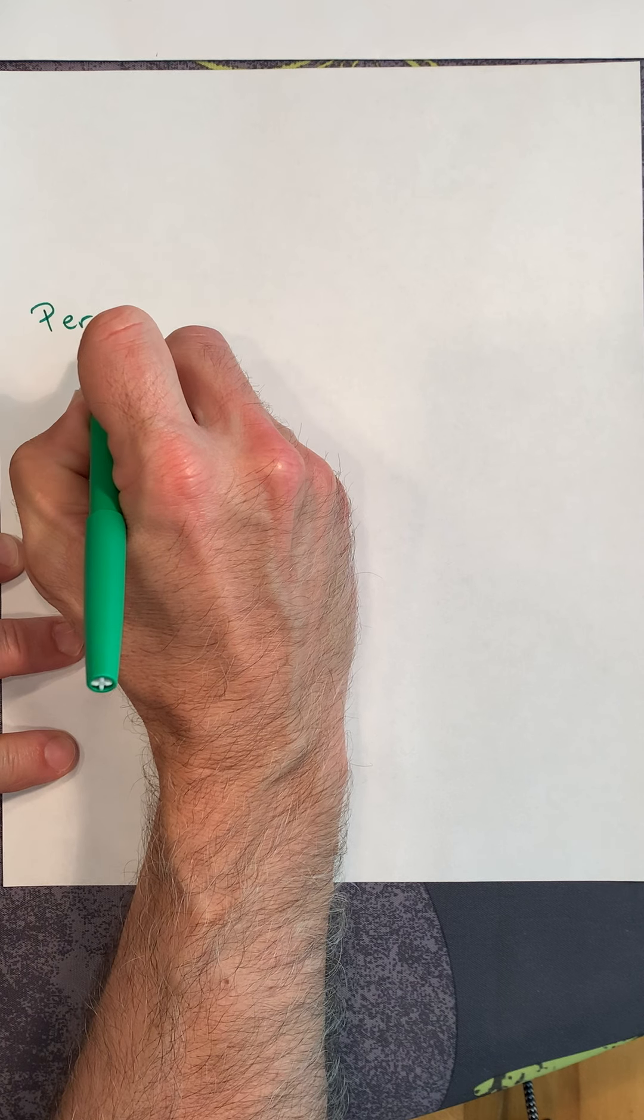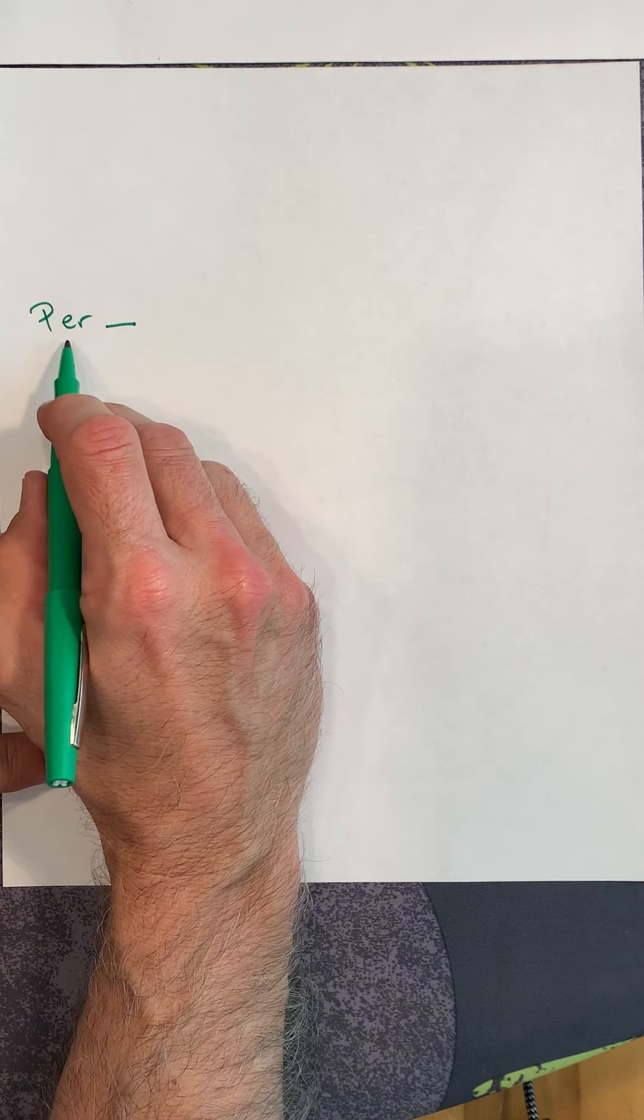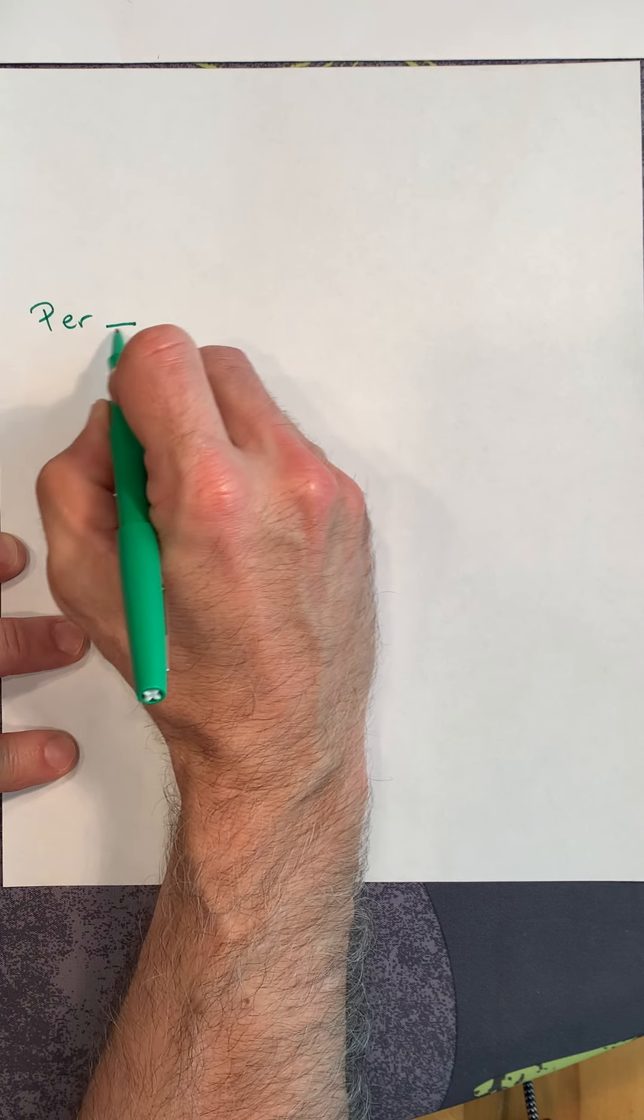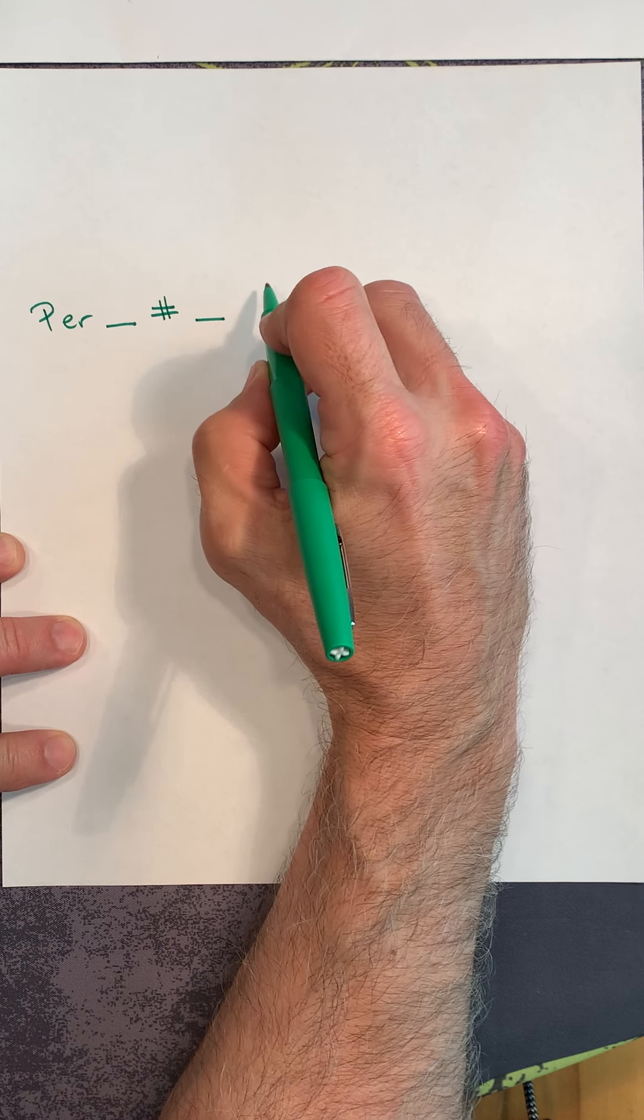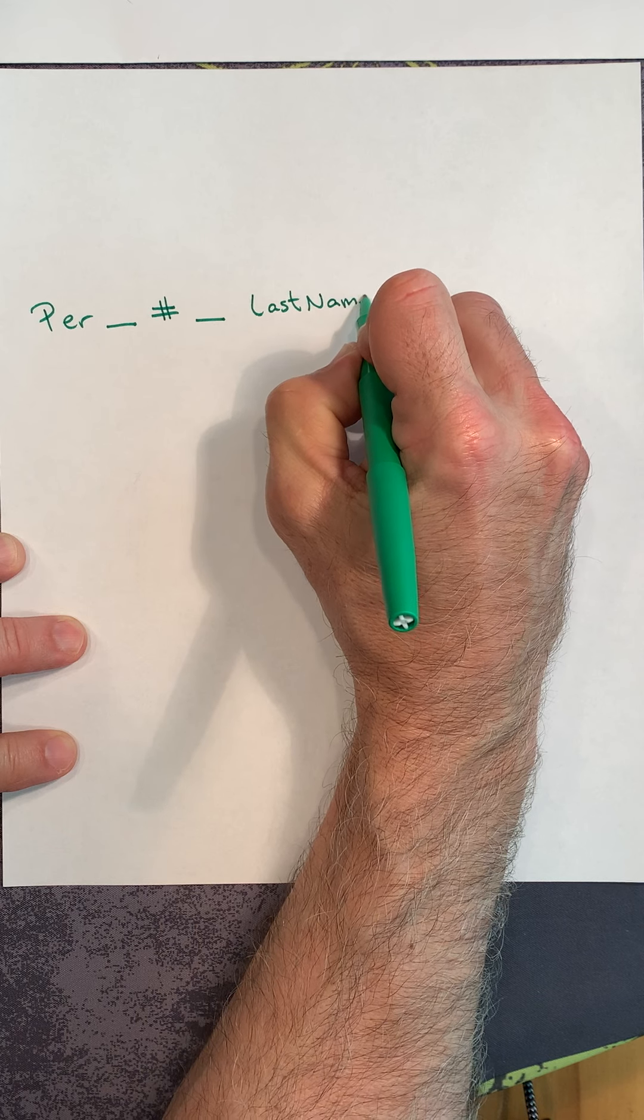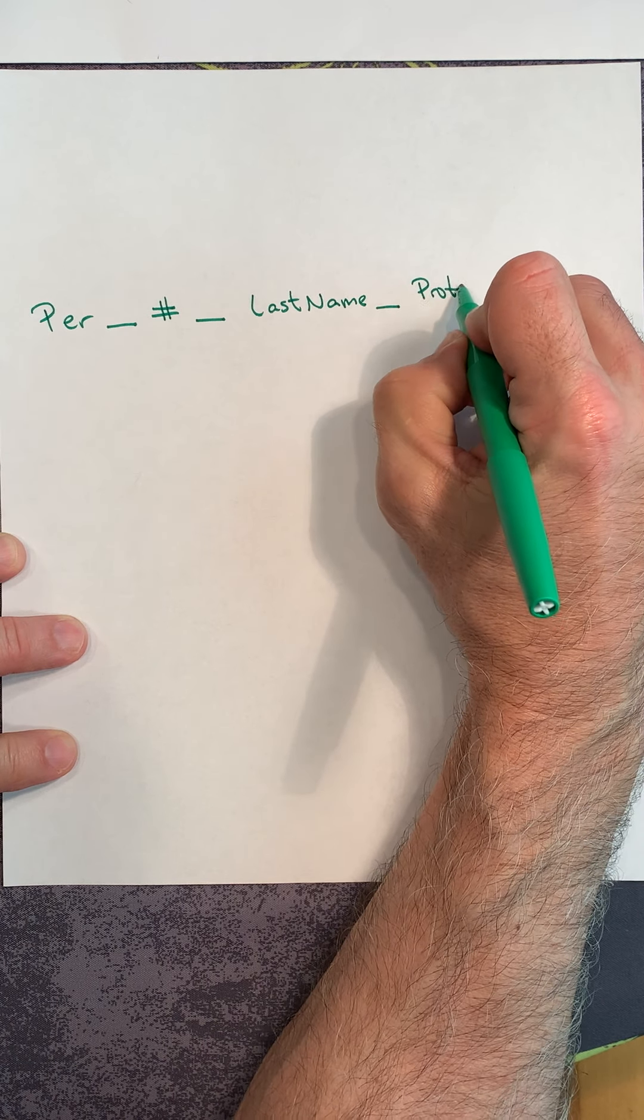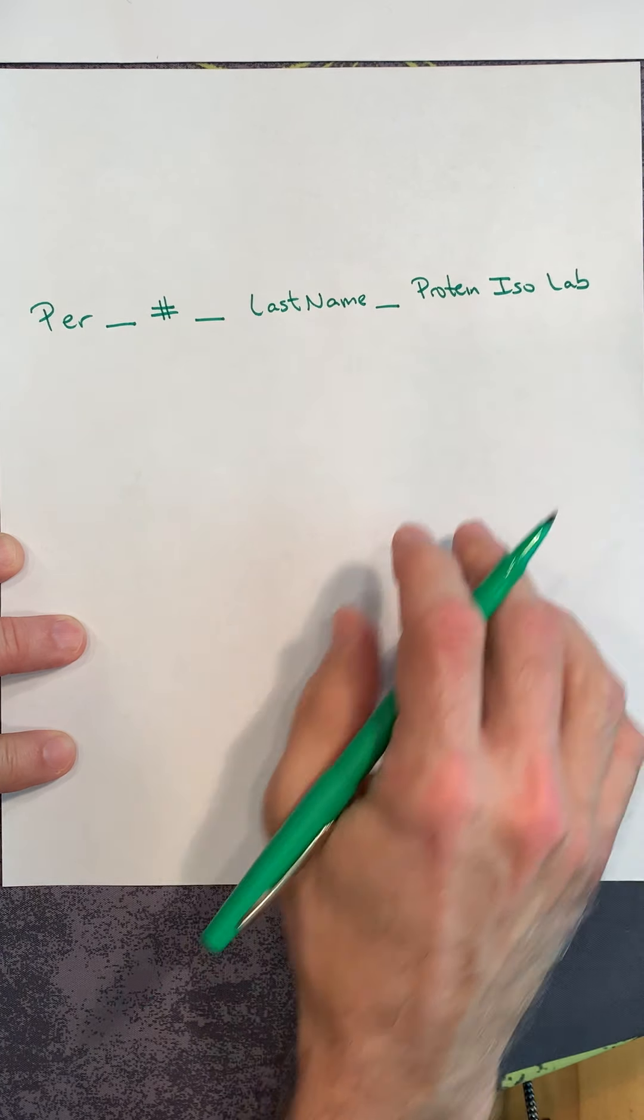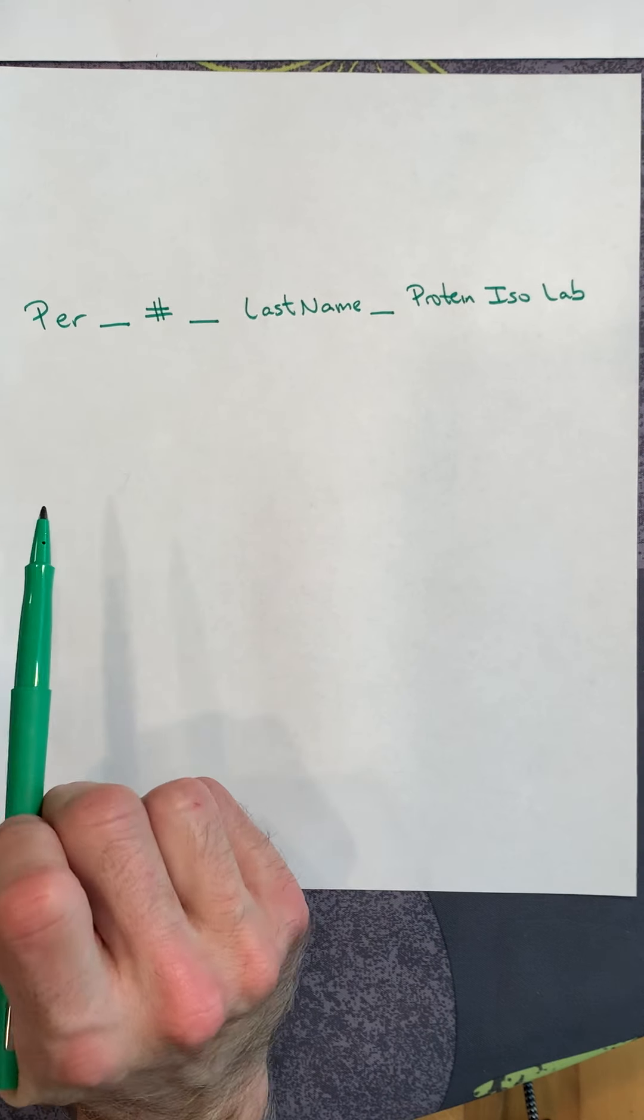So first thing, the file name. When you save your PDF, if you could put the period, either a 1 or a 3, whichever class you are in. So it'd be period underscore, then the 1 or the 3, and then your last name please, and then as the suffix, the Protein Isolation Lab.